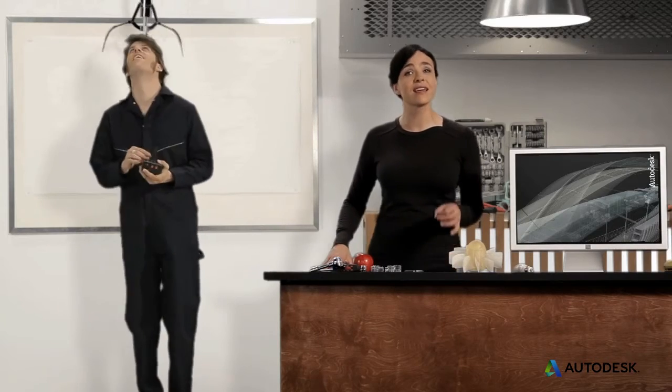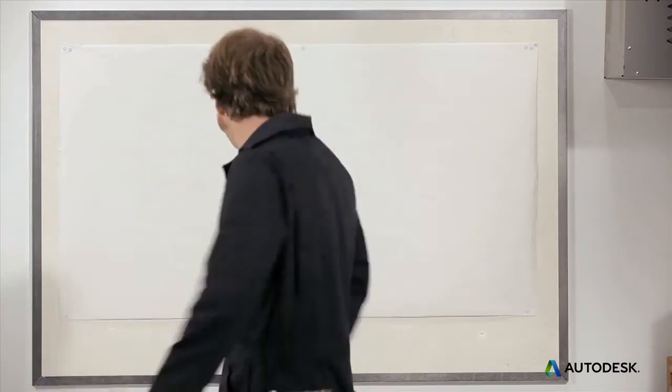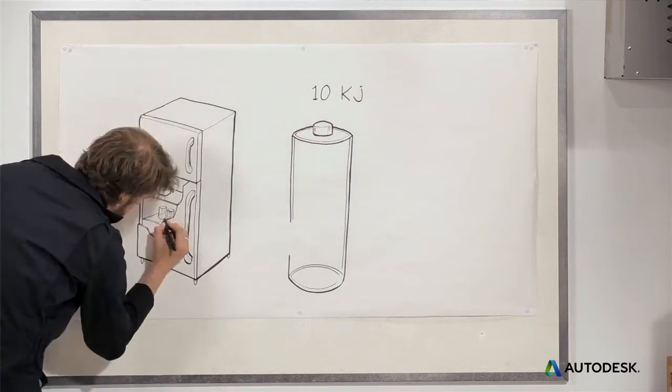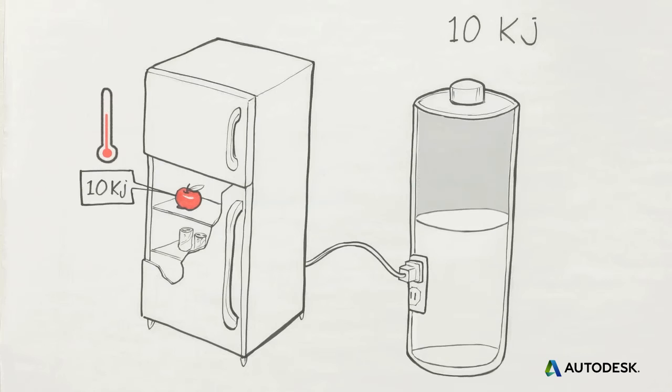Lifting a person that high could take a kilojoule of energy. A double-A battery holds about 10 kilojoules of chemical energy. And you need about 10 kilojoules to move enough heat energy from an apple to cool it to refrigerator temperature. So is that all the energy this apple needs to stay fresh? Of course not. The fridge has to keep using energy over time so the apple stays cold.